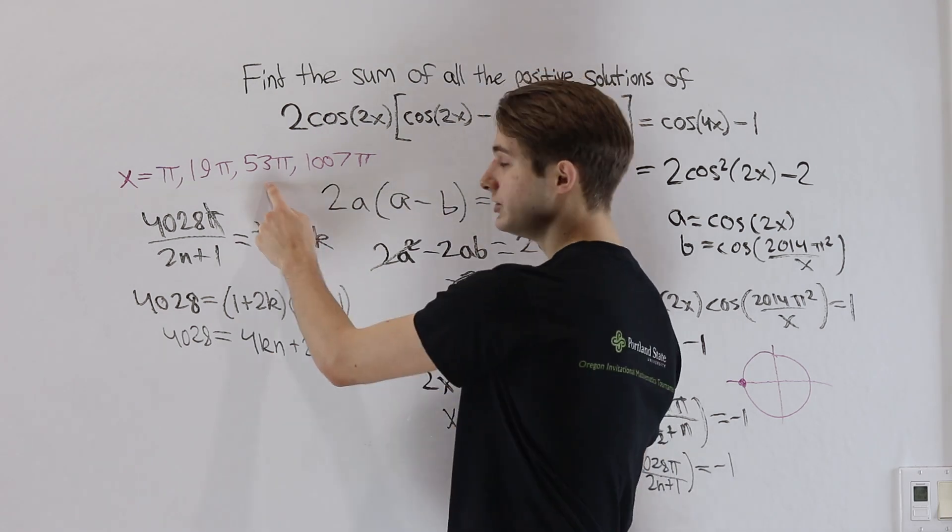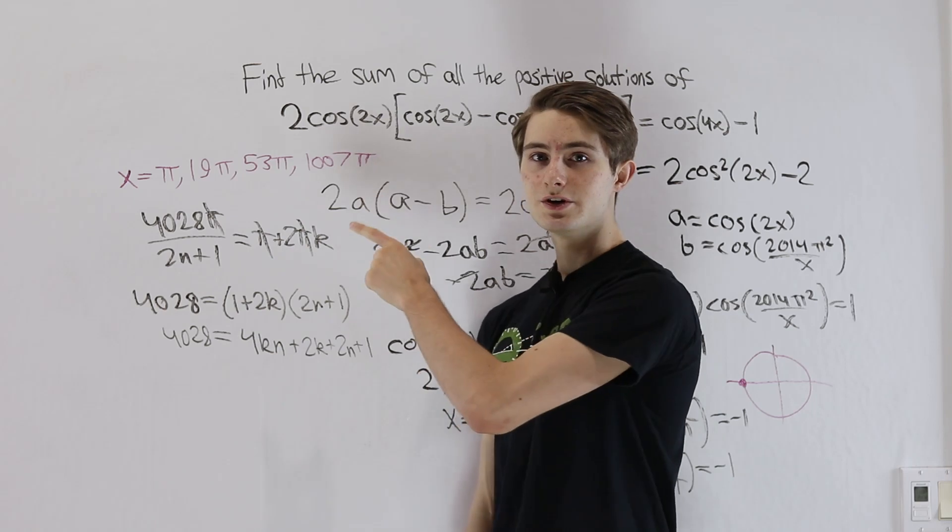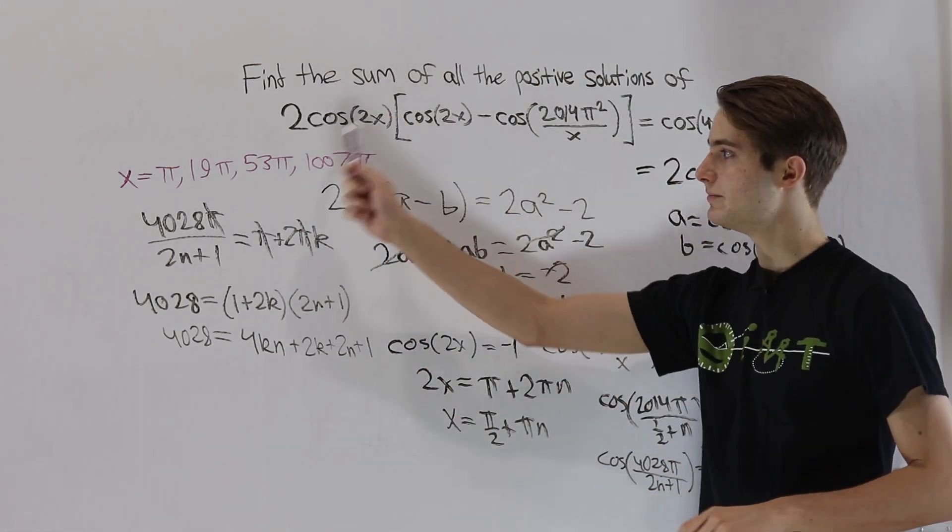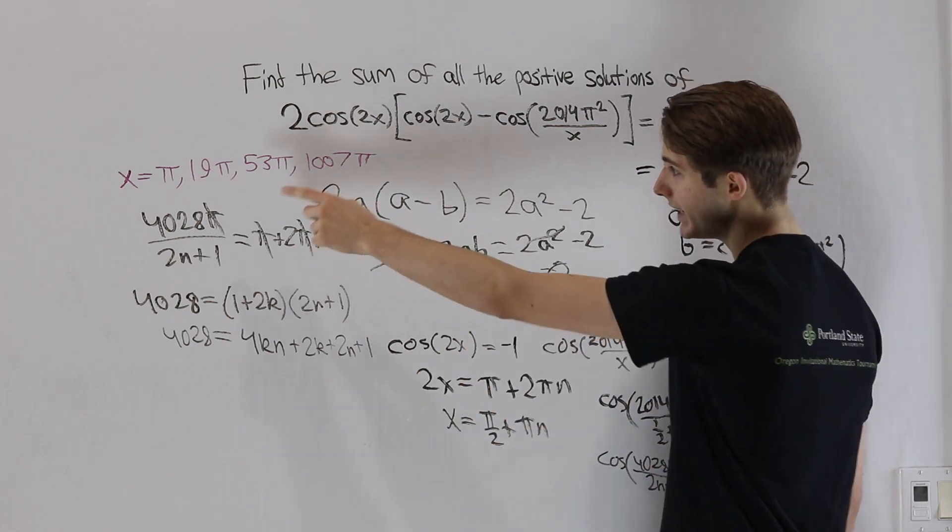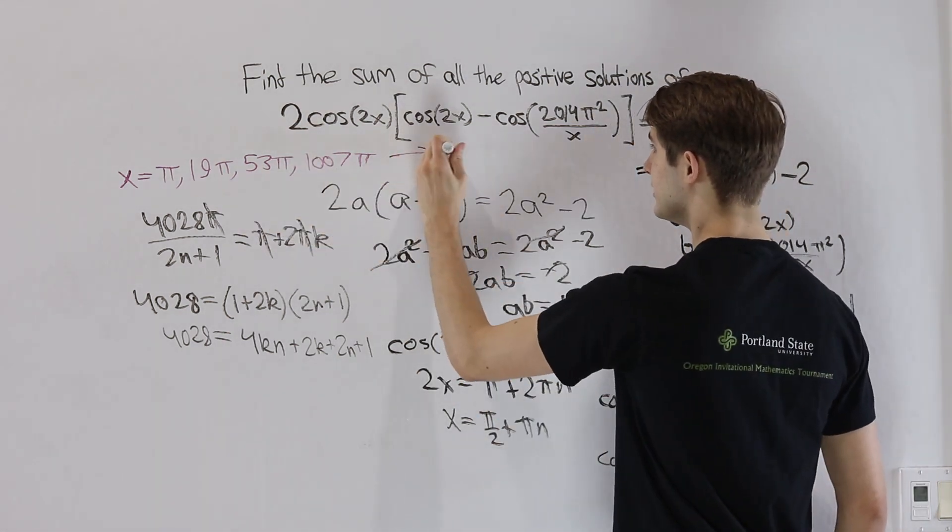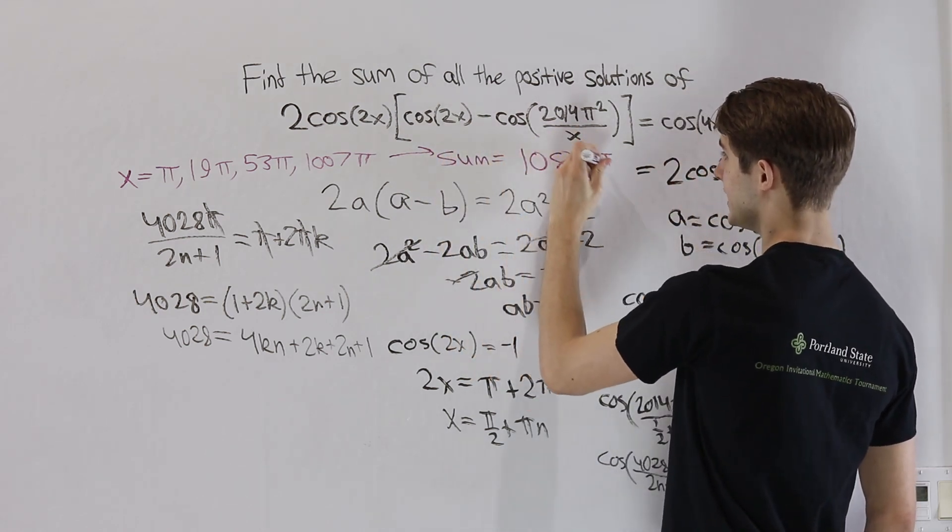And that means that the solutions we got initially are the only solutions we need. So if these are all the solutions to the equation, all we need to do is find the sum of those solutions. If we add up π, 19π, 53π, and 1007π, our result for that sum is going to be 1080π.